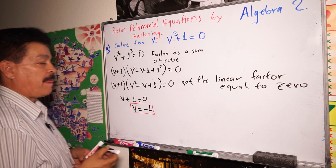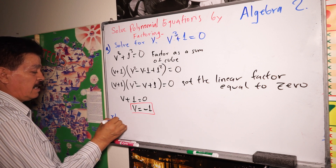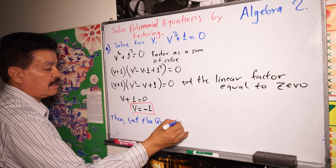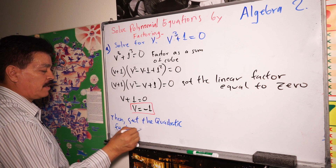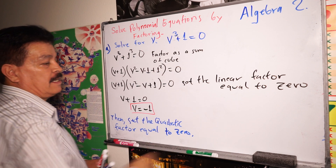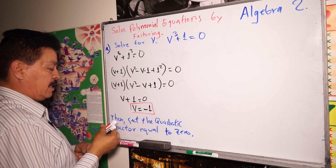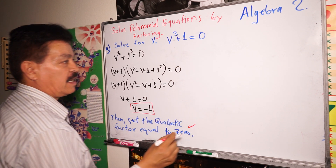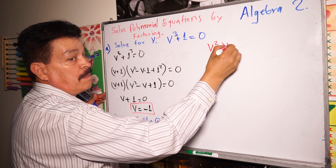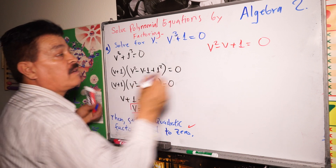Next step: set the quadratic factor equal to zero. So we have B squared minus B plus one equals zero.